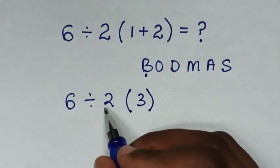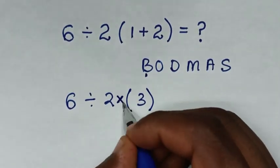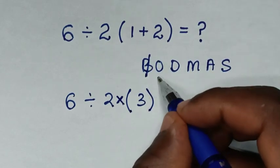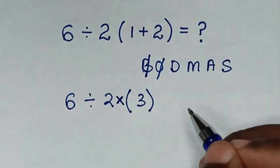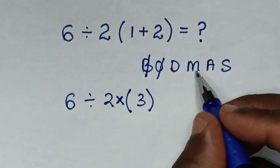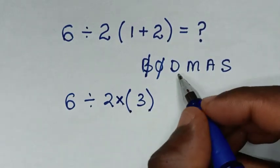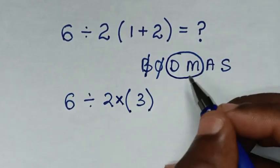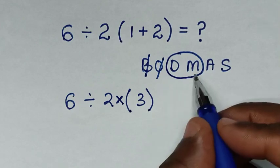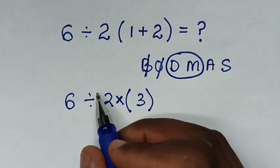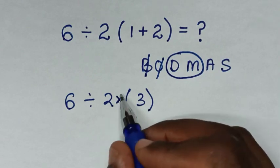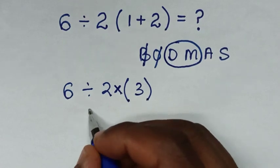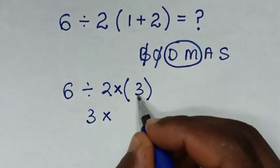Then between 2 and 3 is a multiplication sign. So after we already deal with this bracket, we don't have order or exponents. But we have division and this multiplication. So we'll deal with this group of division and multiplication together according to what starts first. Division starts first, so deal with division then multiplication. From division of 6 divided by 2, it is 3, then times this 3.